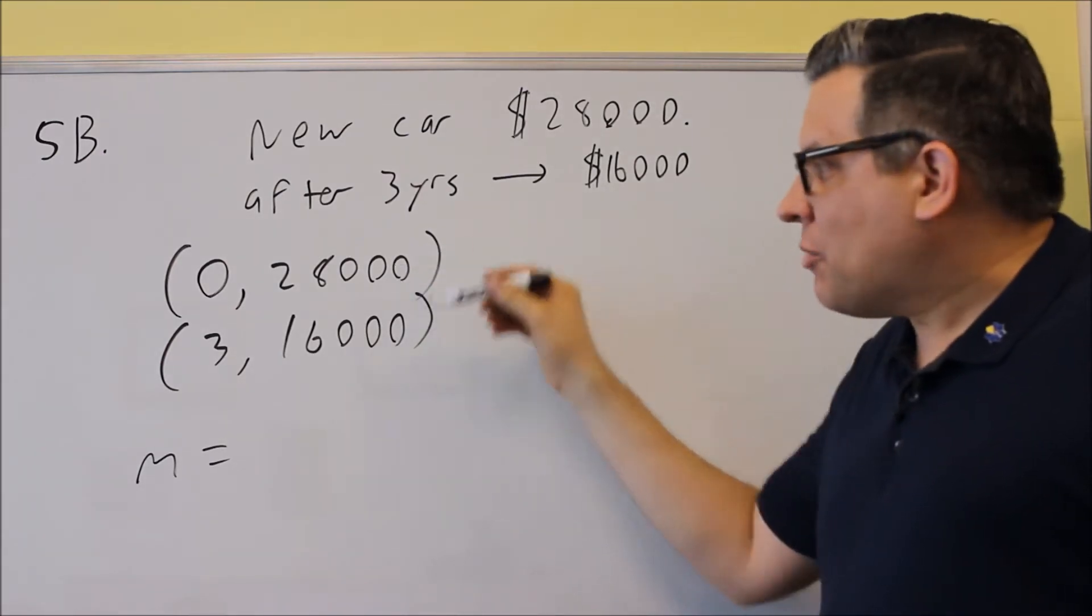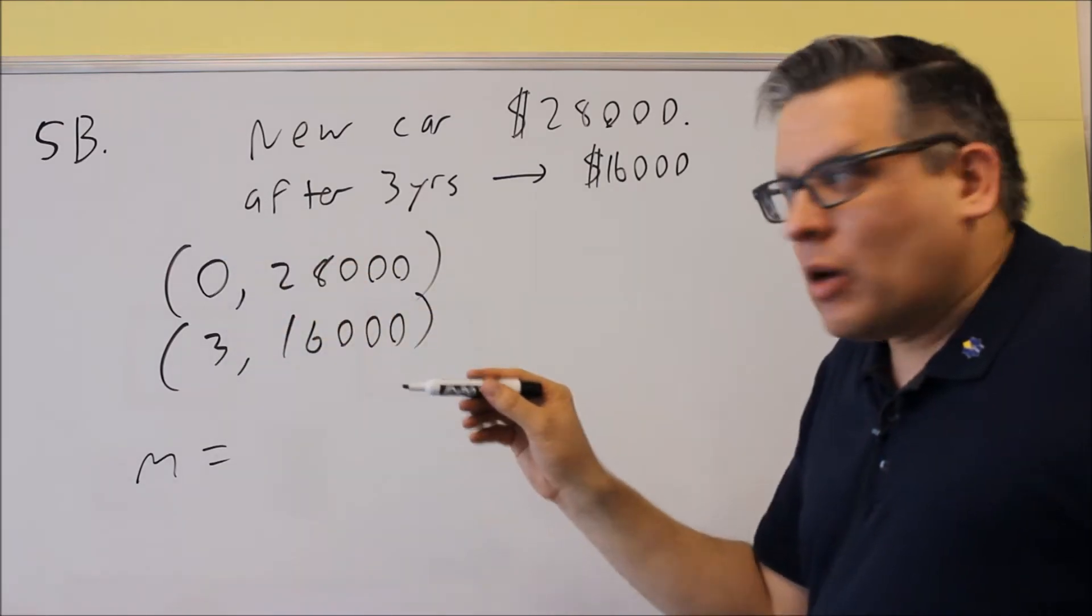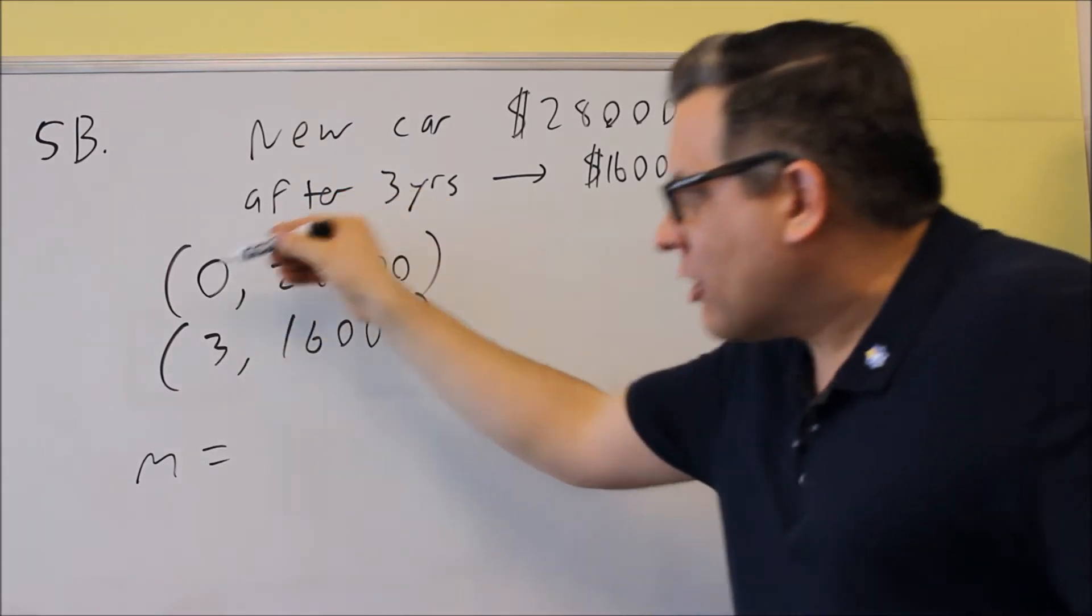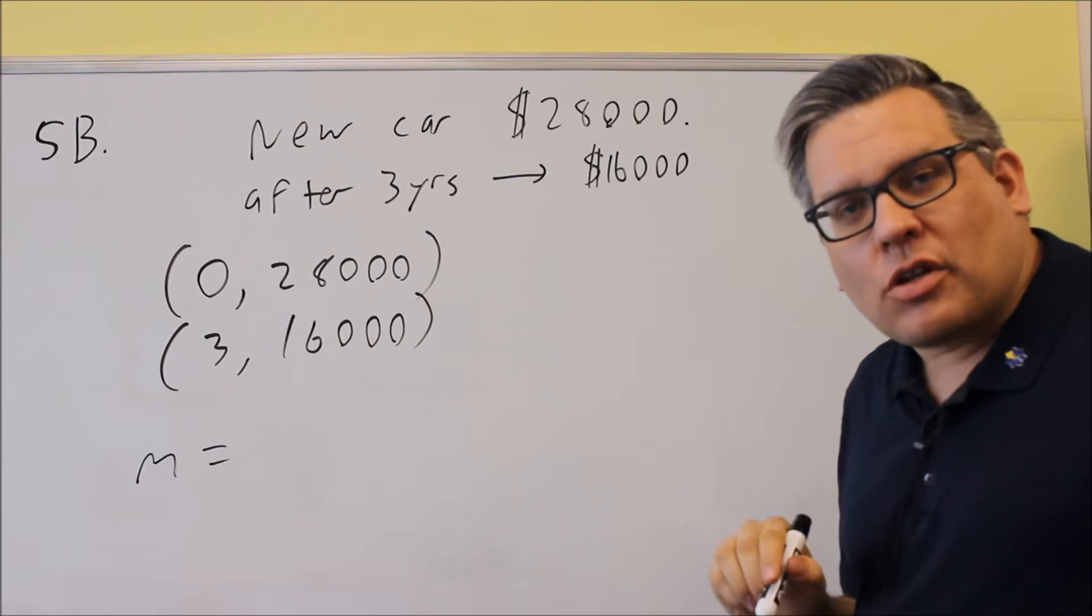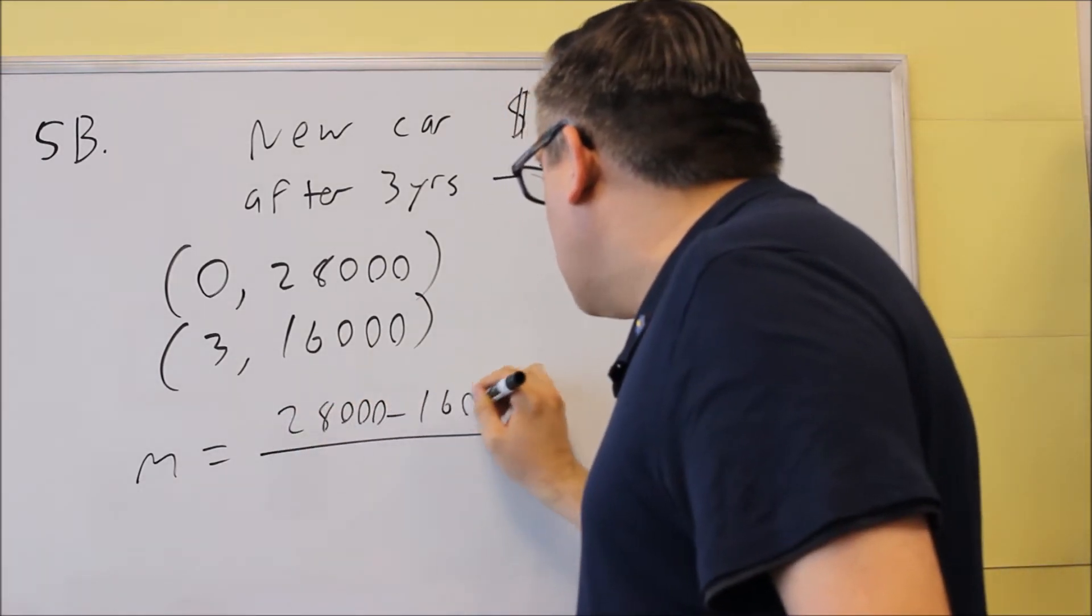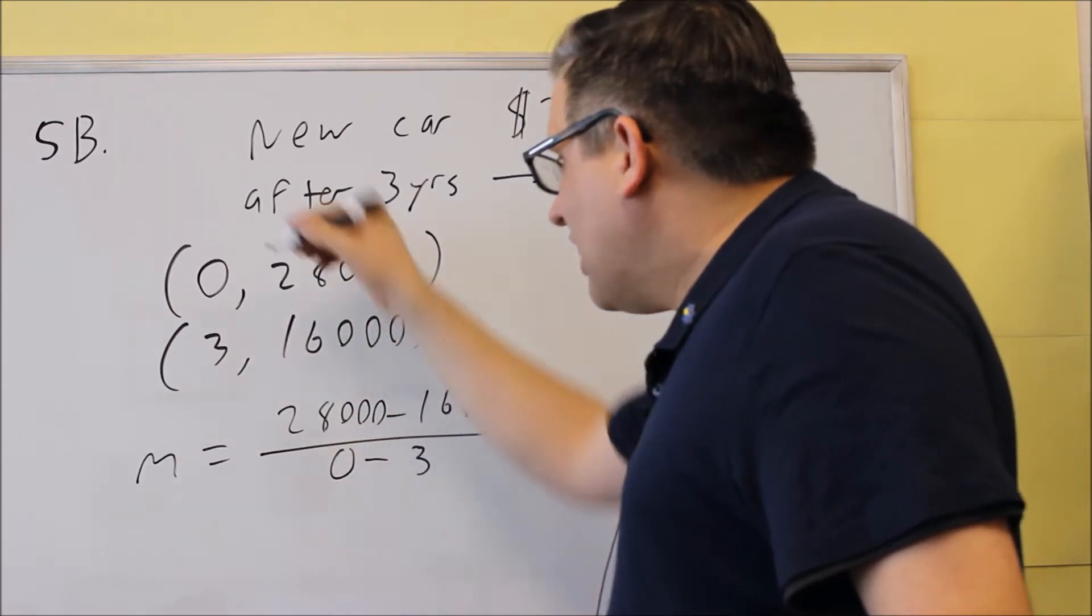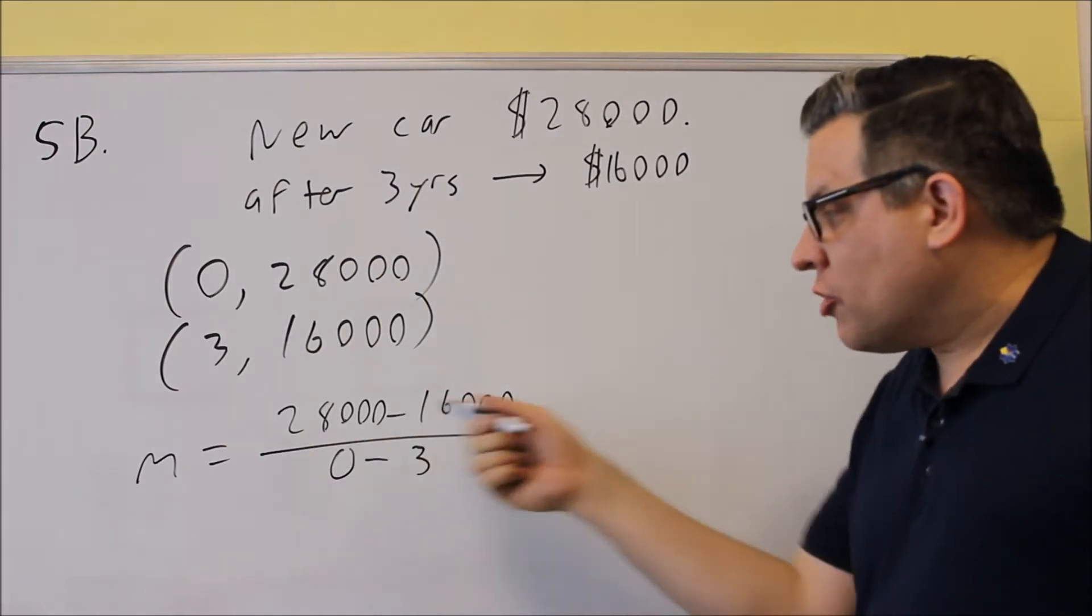For instance, if I do 28,000 minus 16,000, I don't want to do 3 minus 0. I want to do this one minus this one, and this one minus this one. Make sure we subtract in the same order. So 28,000 minus 16,000, and on the bottom, 0 minus 3.